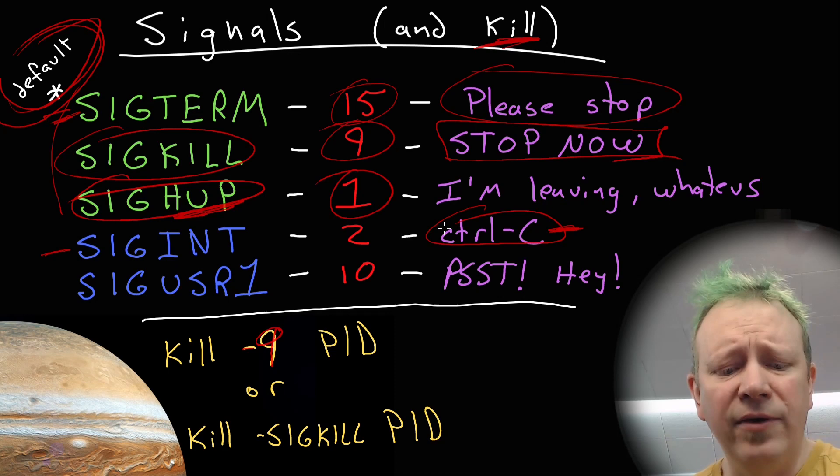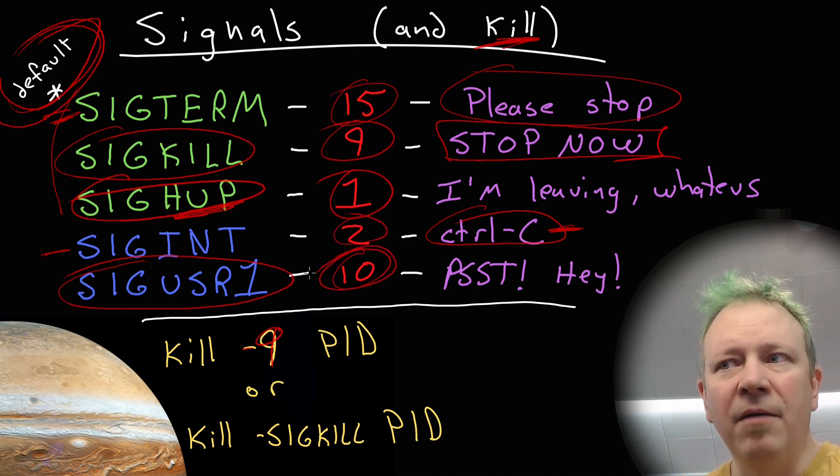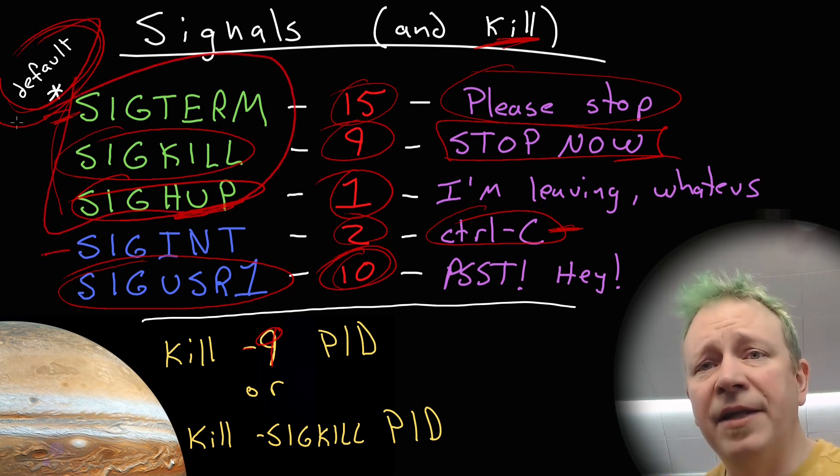And then there are a whole bunch of other ones. One that I see used periodically though is signal user one. And this is one that doesn't have a specific use. A program can do whatever it wants with this. If it receives SIGUSR1, which is signal 10, signal interrupt is signal two. If it receives signal 10, it can do whatever it's programmed to do. For example, some programs will like update their progress. Like if you send SIGUSR1, I think to DD as it's running, it will print on its screen like how far along it is. Signal user one, there's also signal user two. These can be used by programs to respond in whatever way the developer wants them to. But again, these three are the ones specifically mentioned in Linux plus. And now you know more about them than you probably needed to.